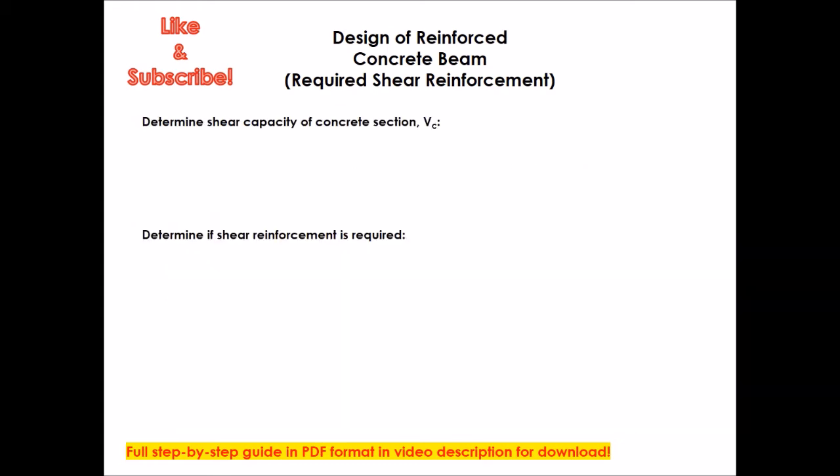The first step you want to do is to determine the shear capacity of the concrete section, Vc. This is an equation I pulled straight from ACI. Please make sure to download the PDF below that I provide, which is a step-by-step guide because I tell you the section that you can find these equations. And this is Vc equals 2bd times lambda times the square root of f'c.